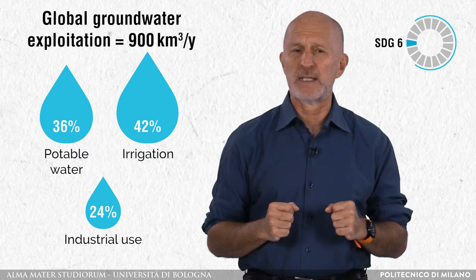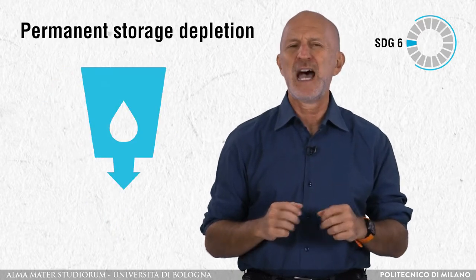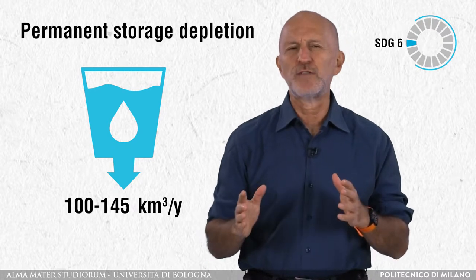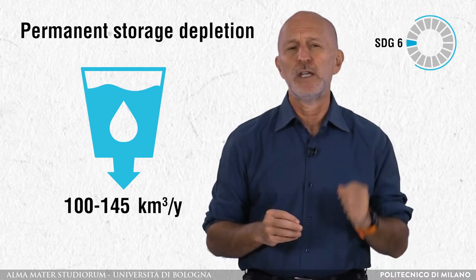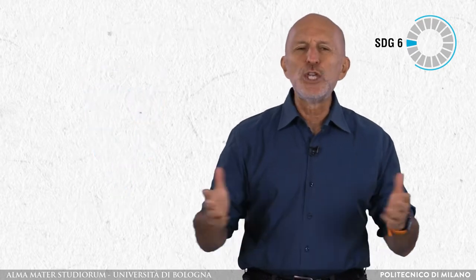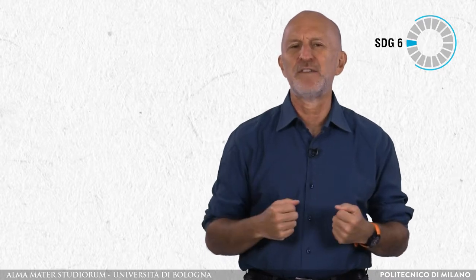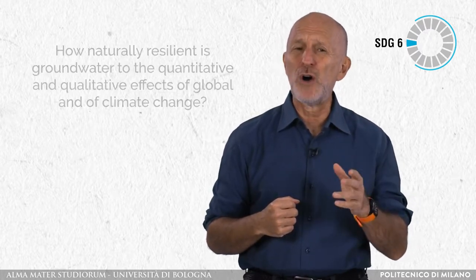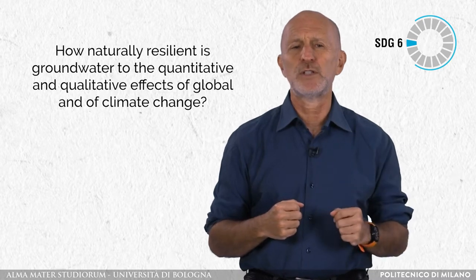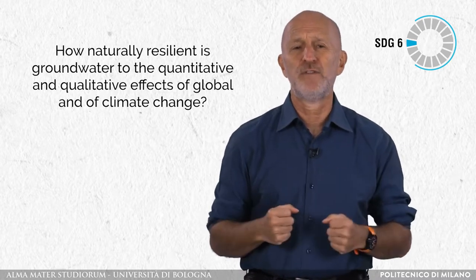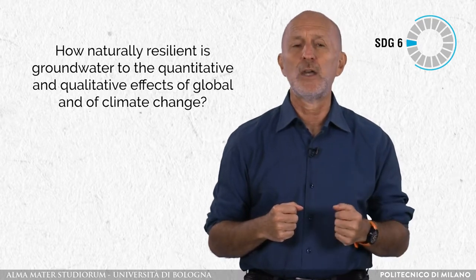Estimates of rates of permanent storage depletion are in the range of 100–145 km³ per year during 2000–2008. The huge volume of groundwater reservoirs, along with storage times varying from decades to thousands of years and the poor flow velocity compared to rivers, provide an excellent buffer against the effects of climate variability. But questions arise as to how naturally resilient groundwater is to the quantitative and qualitative effects of global climate change.